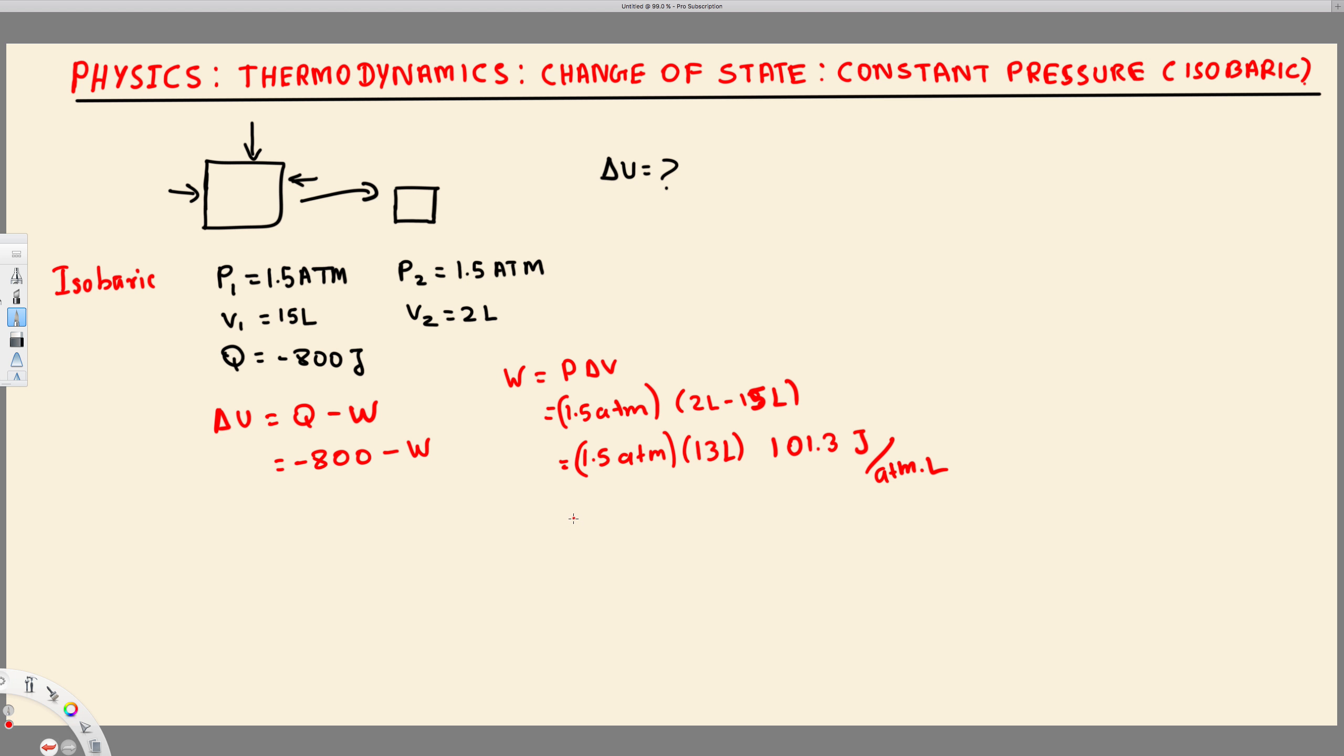So if you plug all this value in calculator, you will get negative 1976 joule. Also, you have to accept the negative answer because whenever we have compressed, it is work done to the system, right? So work done to the system means work done to the system is always negative.